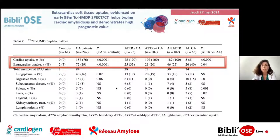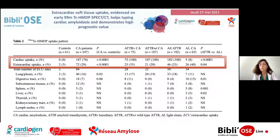Parmi les résultats, on observe que la fixation cardiaque est présente dans 100% des cas dans l'amylose à transthyrétine, qu'elle soit sauvage ou mutée. La fixation cardiaque dans l'amylose AL est beaucoup plus rare ; elle était ici de 8%, ce qui est concordant avec les séries aux alentours de 10%.